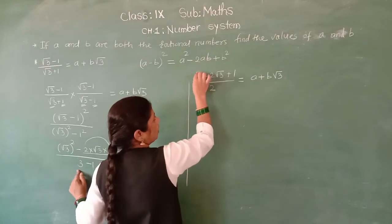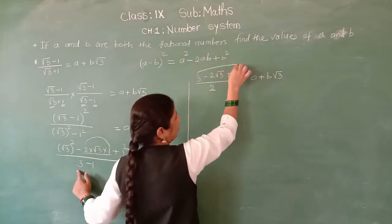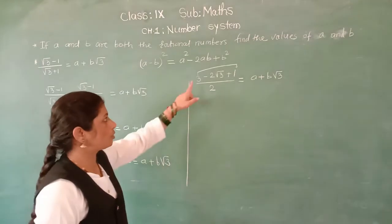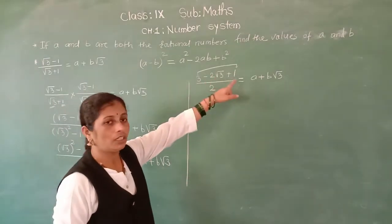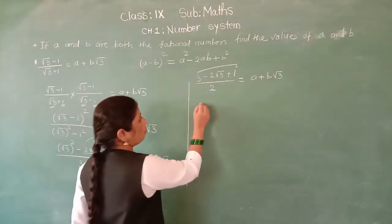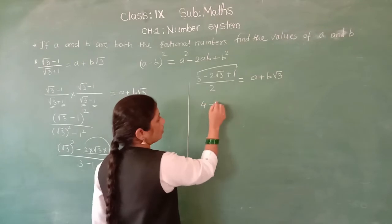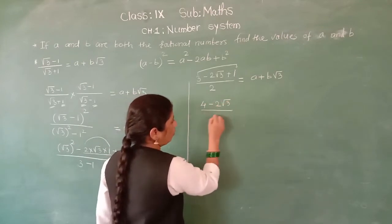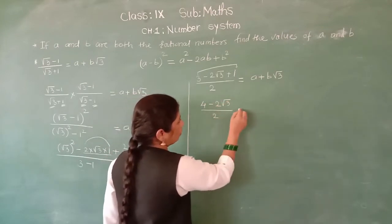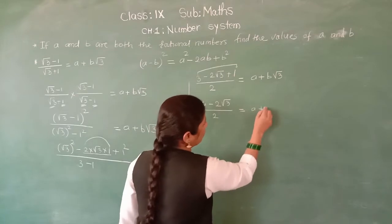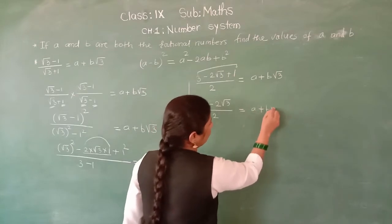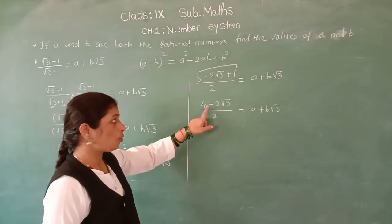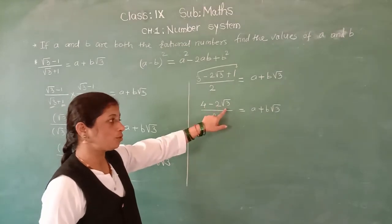Now here, this 3 and this 1 are simple numbers, so 3 plus 1 is 4. So you have 4 minus 2 root 3 upon 2 equals A plus B root 3. Now we cannot do the subtraction directly — 4 is a simple number and 2 root 3 is with the irrational number, so we cannot subtract them.